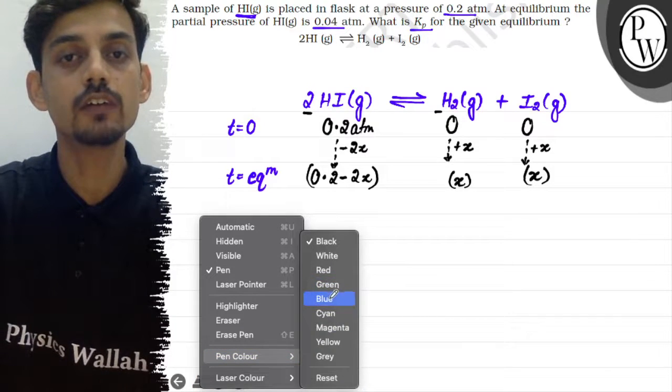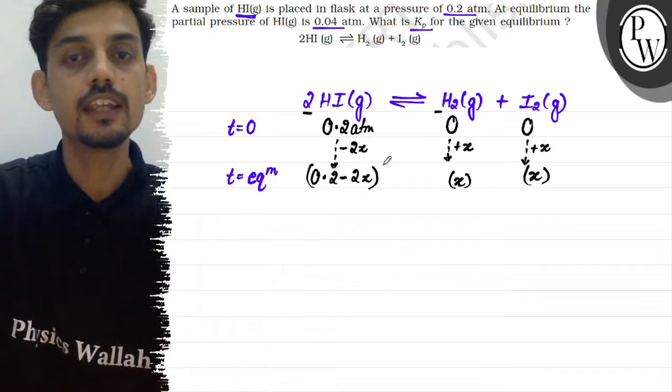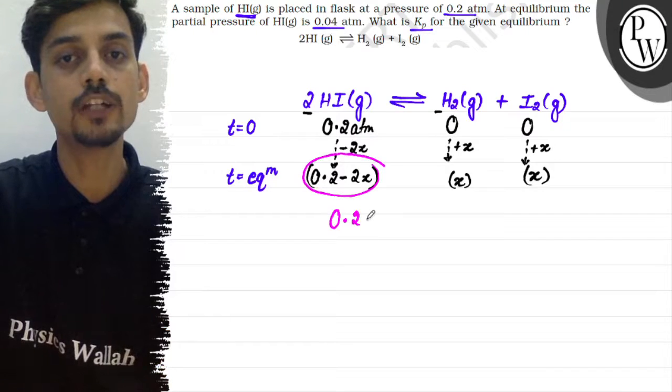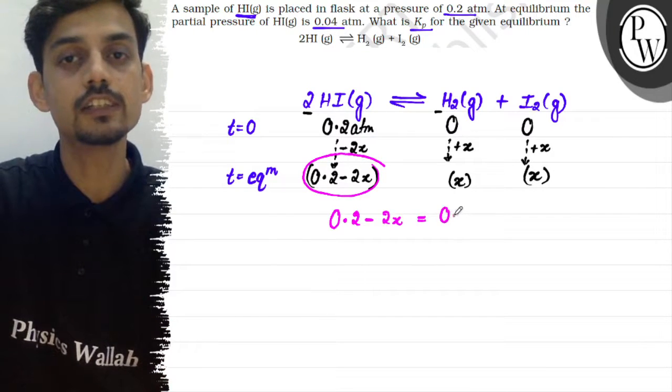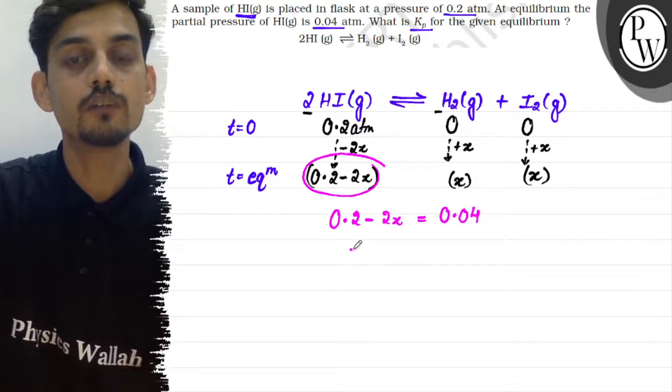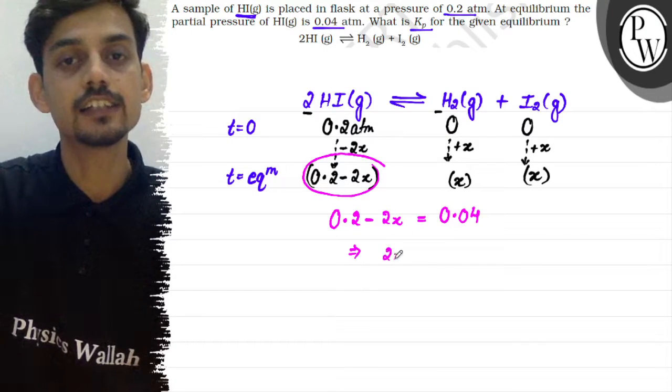According to the question, this partial pressure is given: at equilibrium HI's partial pressure is 0.2 minus 2x, and according to the question this is given to us as 0.04. From here we can find x. So 2x equals 0.16, therefore x will come out to be 0.08.